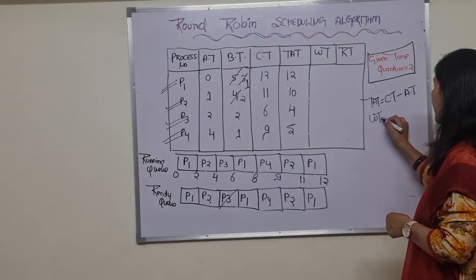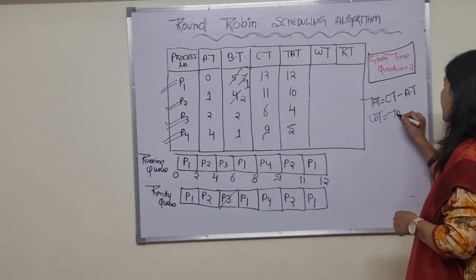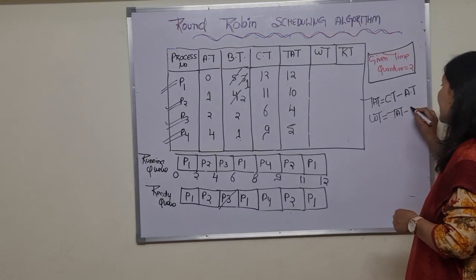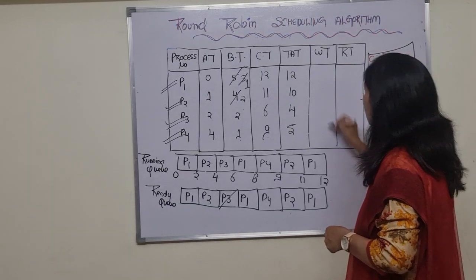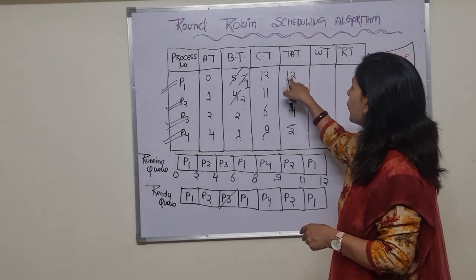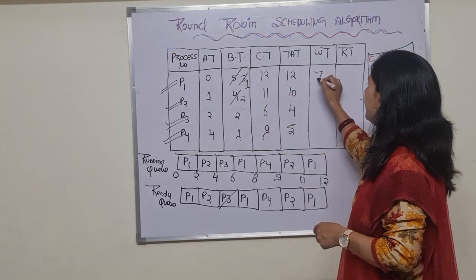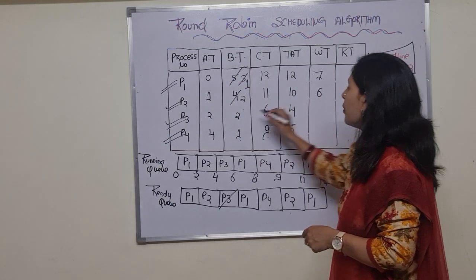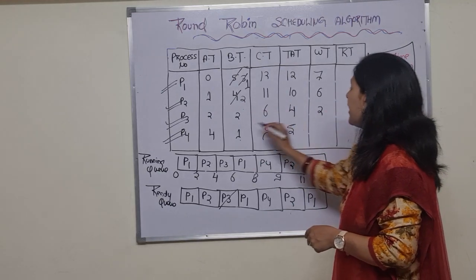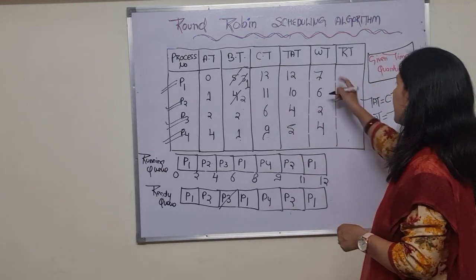To calculate waiting time, the formula is: turnaround time minus burst time. So: P1 = 12 - 5 = 7; P2 = 10 - 4 = 6; P3 = 4 - 2 = 2; P4 = 5 - 1 = 4.